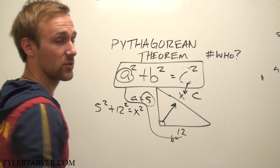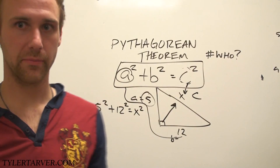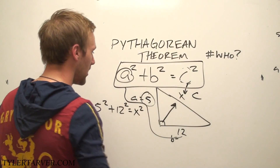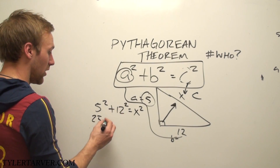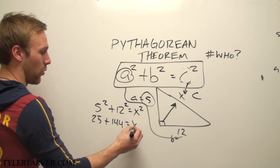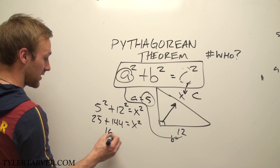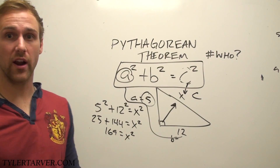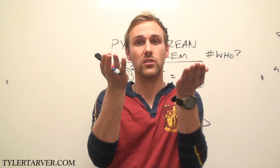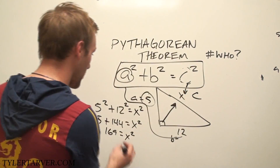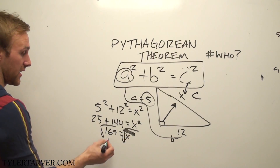We've got 5 squared plus 12 squared equals X squared. Five squared is 25. Twelve squared is 144. X squared we don't know — that's why we're working the problem. Twenty-five plus 144 is 169. Now, what do you do to get rid of a squared? The opposite of squaring — the square root. So we're going to take the square root of both sides. That square root cancels out the squared. The square root of 169 is 13.